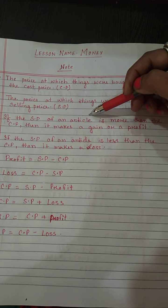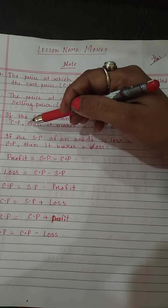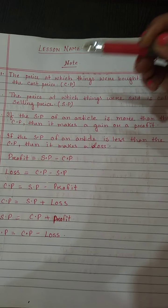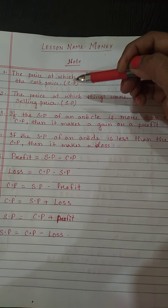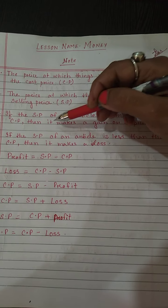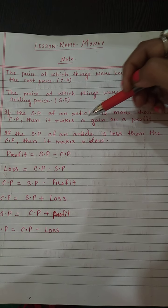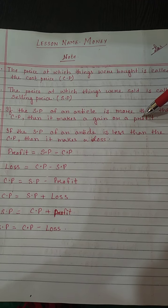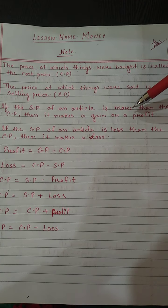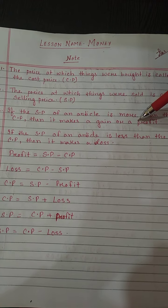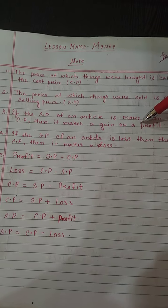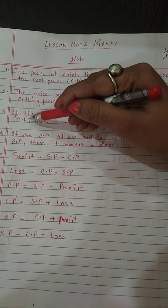Number three point: if the selling price — SP means selling price — of an article or item is more than the CP, that means if the selling price amount is more than CP, then it makes a gain or a profit. Then it will be said as profit.